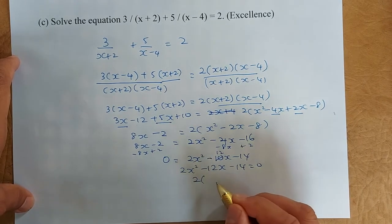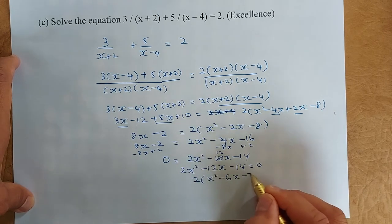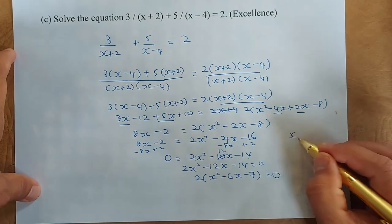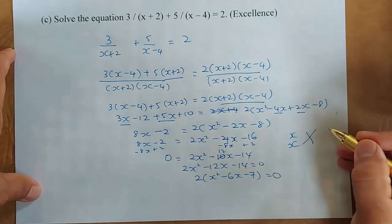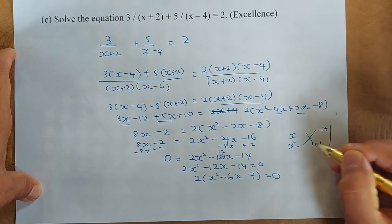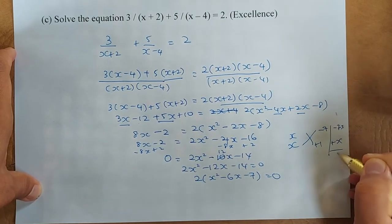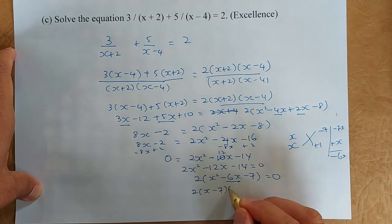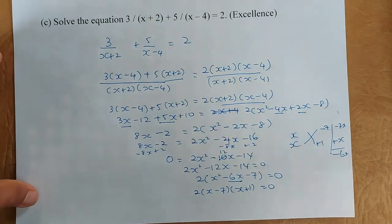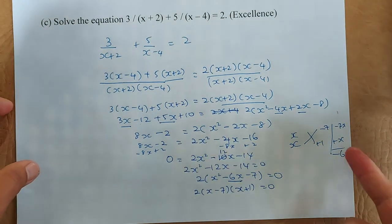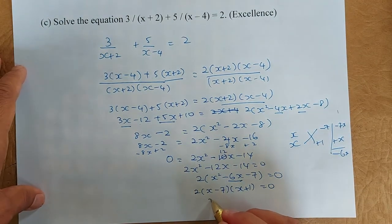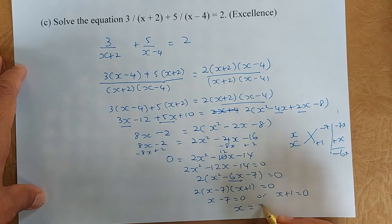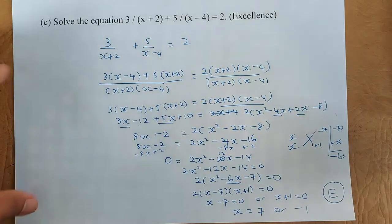Simplify by factorizing out 2: x squared minus 6x minus 7 equals 0. Now we factorize: the factors are (x minus 7)(x plus 1), because minus 7 times plus 1 is minus 7, and minus 7x plus x gives minus 6x. So the factorized form is (x minus 7)(x plus 1) equals 0, giving x minus 7 equals 0 or x plus 1 equals 0. Therefore x equals 7 or x equals negative 1. And that is an excellence.